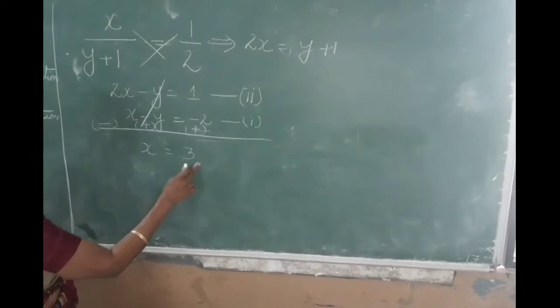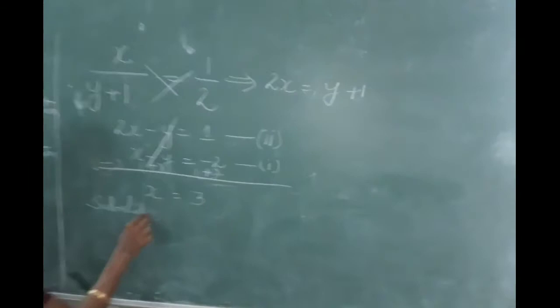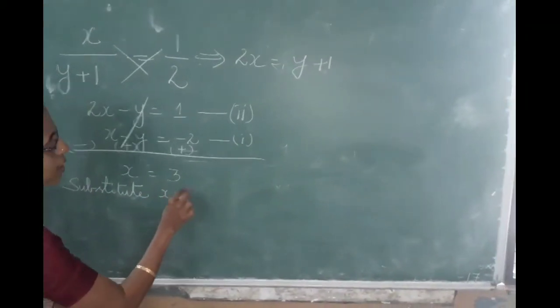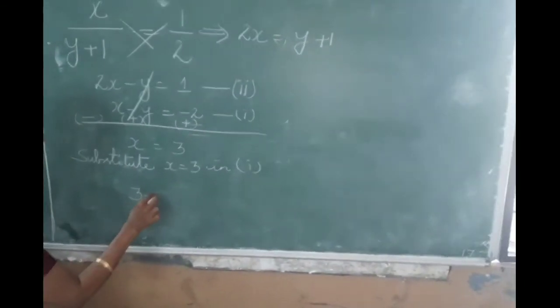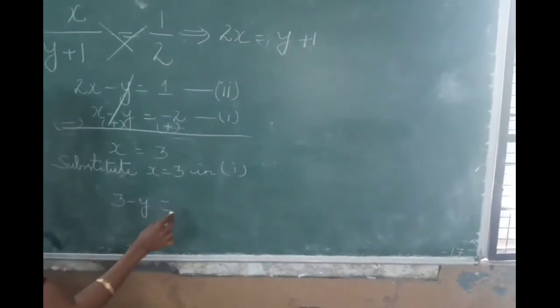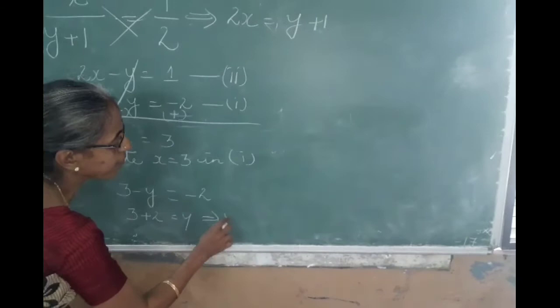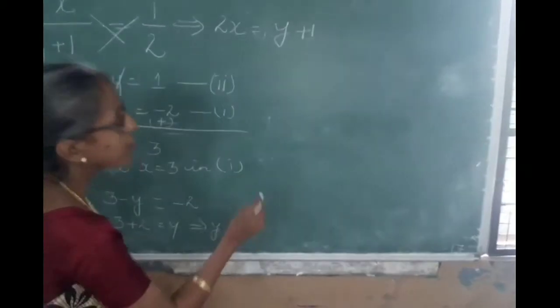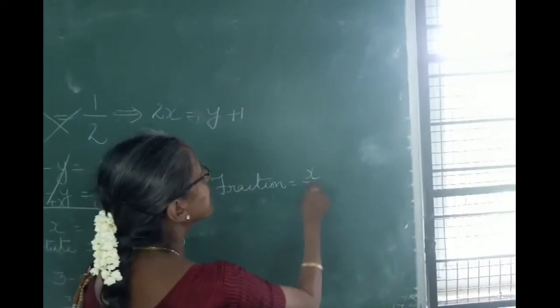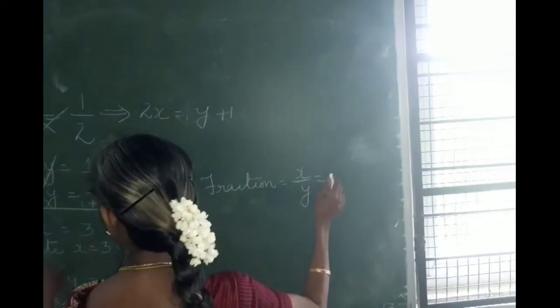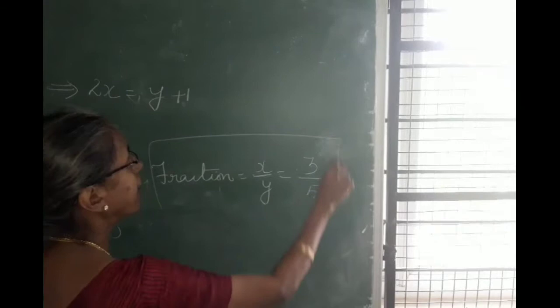Now I have got x value as 3. So I can substitute x is equal to 3 in equation 1. So what will I get? 3 minus y will be equal to minus 2, or 3 plus 2 is equal to y. This gives y value is equal to 5. So what is the fraction? Fraction is x by y. So x is 3, y is 5. The fraction is 3 by 5. This is your answer.